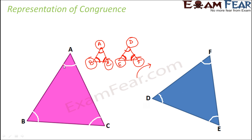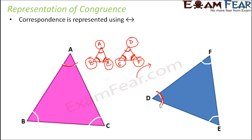But the challenge comes when you have your triangles in this fashion. When you have it in this fashion, the corresponding angle for angle A is actually this angle, which is angle D. So you actually need to identify in which orientation the two triangles are overlapping each other — only considering that orientation will you be able to find the corresponding parts of the two triangles. And how do we represent the correspondence? Correspondence is represented using this symbol — a line with arrows on both sides. So in this particular example, angle A corresponds to angle D, angle B corresponds to angle E, and angle C corresponds to angle F.